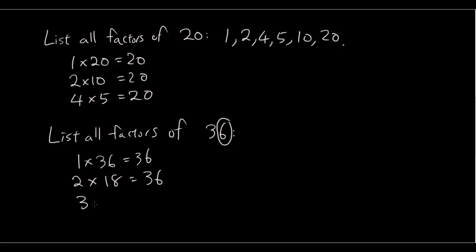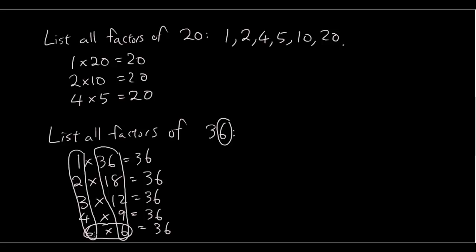And then 3 times 12 is 36. 4 times 9 is 36. 5 doesn't go into 36. 6 times 6 is 36. So basically, you keep increasing the first number that you're multiplying with, so 1, 2, 3, 4, 6, and you keep decreasing the second number you're multiplying with, until you end up with very close numbers that you're multiplying to give you 36. And that's usually the end.